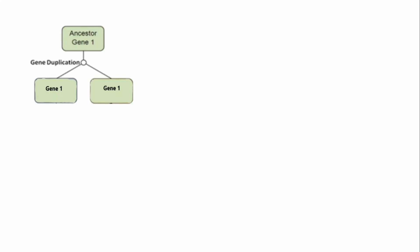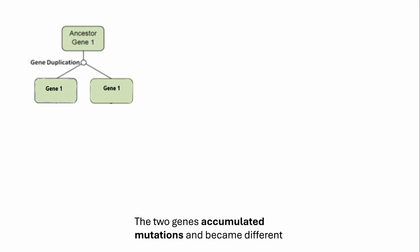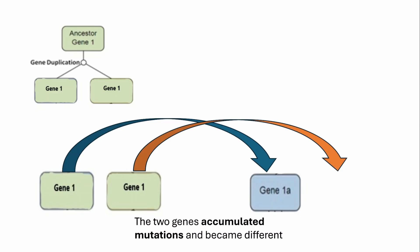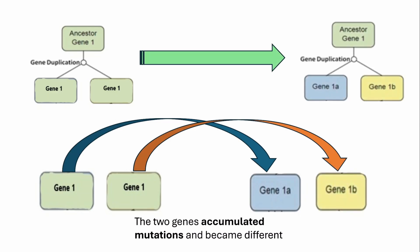We have an ancestor gene that during replication accidentally got duplicated. As a result, we ended up with two copies of that same gene. We know genes acquire mutations over the course of evolution and become different. So, one copy of that gene acquired mutations and became gene 1A, whereas the second copy acquired mutations and became gene 1B. As a result, we have two different genes duplicated from a single ancestor gene.